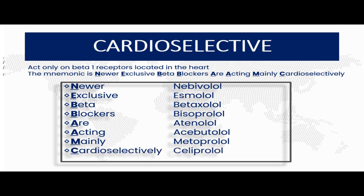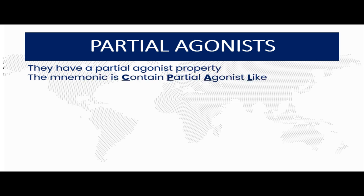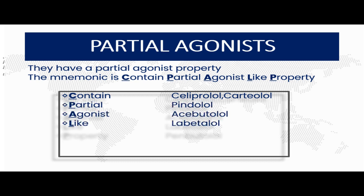The second class is beta blockers with partial agonist properties. To remember this type, use the mnemonic: 'contain partial agonist-like property.' C stands for Celiprolol and Carteolol, P for Pindolol, A for Acebutolol, L for Labetalol, and the last P for Penbutolol.